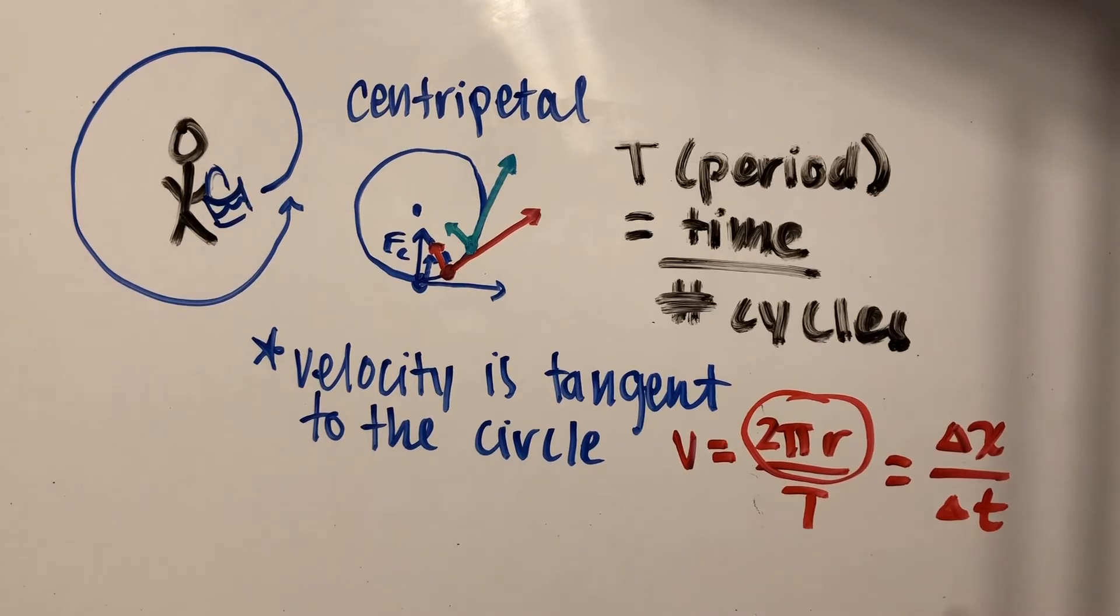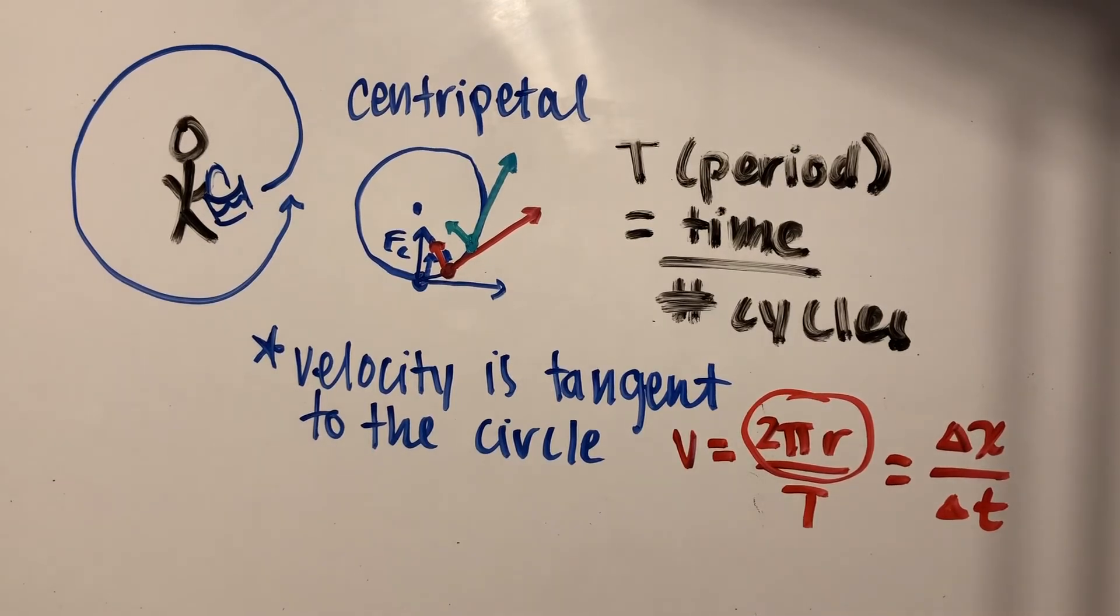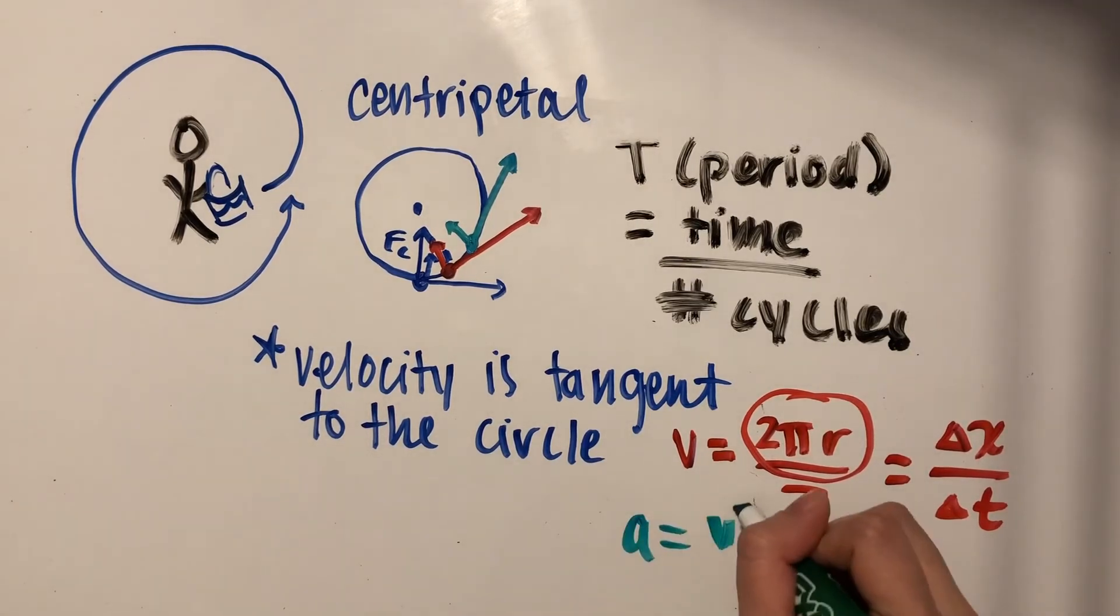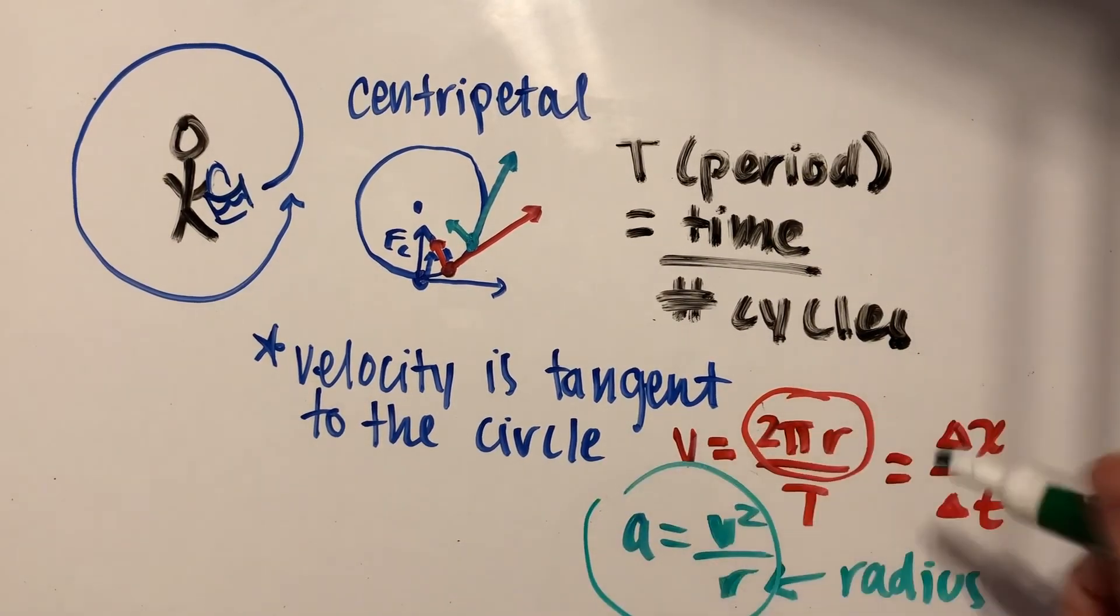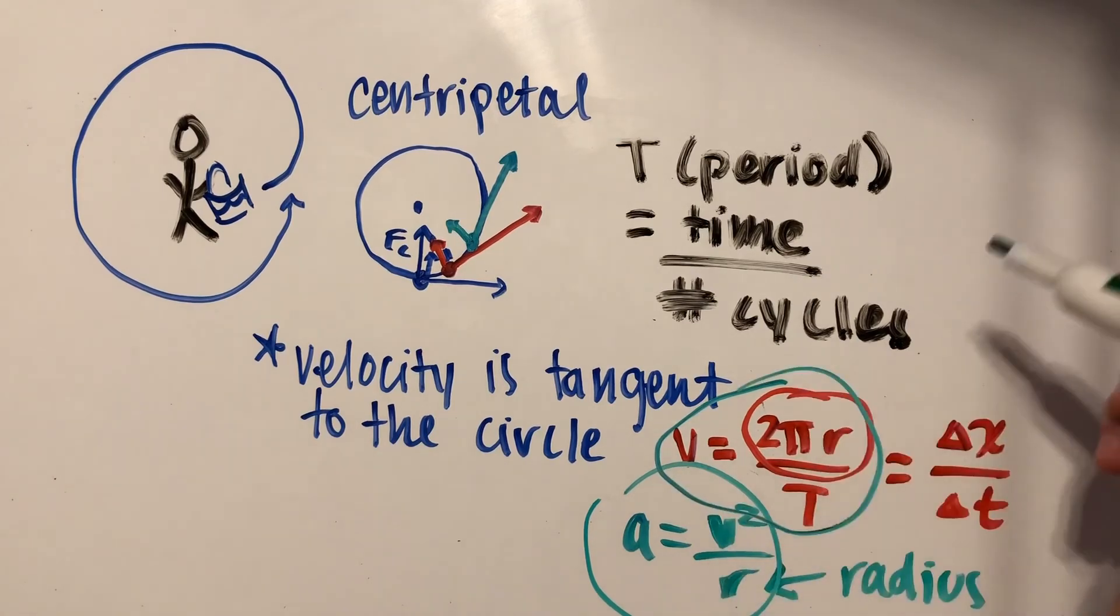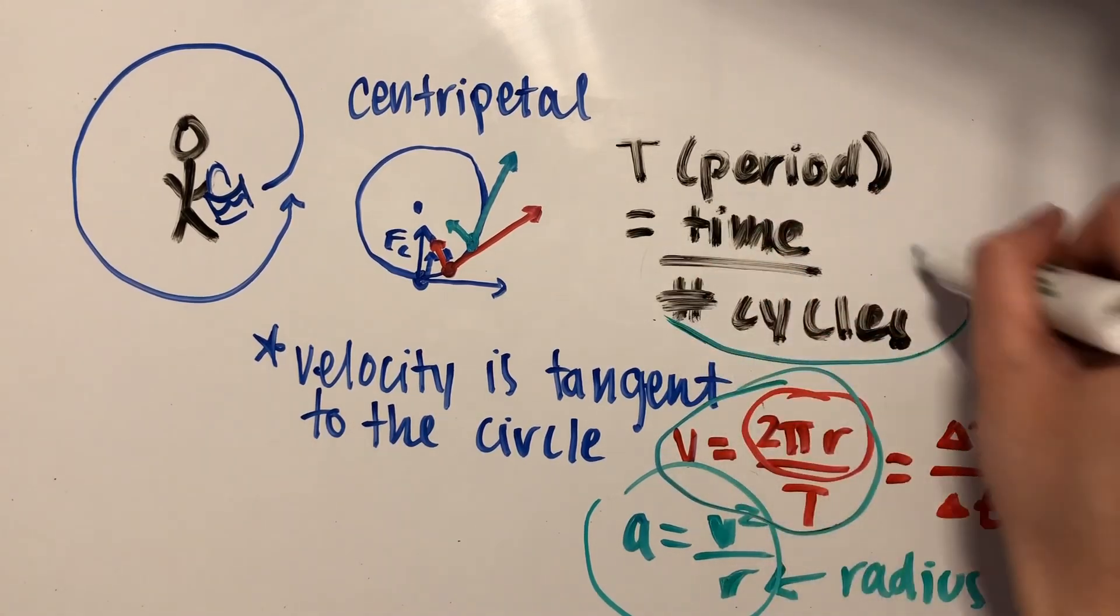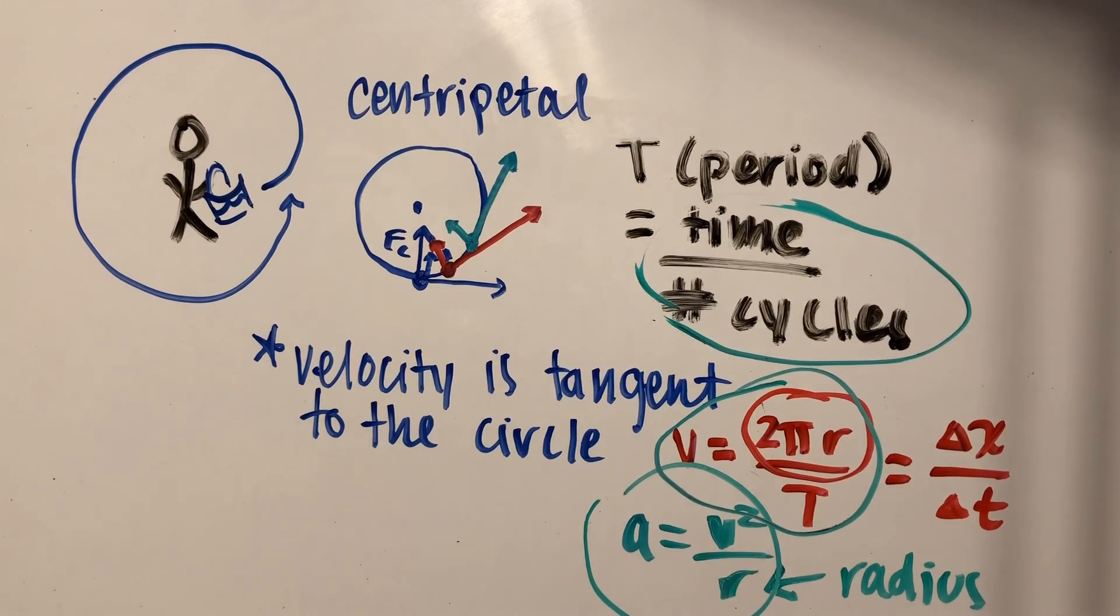One last thing that you'll need to know for circular motion is that acceleration is equal to velocity squared over r, and r is going to be your radius. These three expressions are going to be very important for doing calculations involving circular motion.